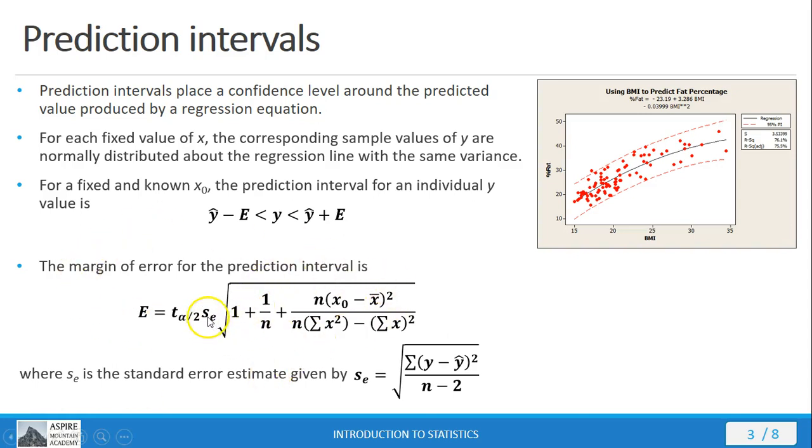Before you can even use this equation, notice that you're going to get this s sub e, which is a variable known as a standard error estimate. You've got to calculate this first before you can calculate anything else in the margin of error equation. This is another little nightmare of a calculation to do by hand all on its own. One thing to notice is you've got n minus 2 degrees of freedom in your standard error estimate. We've seen this before.